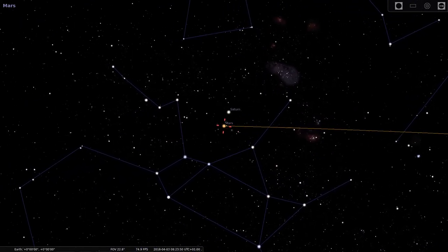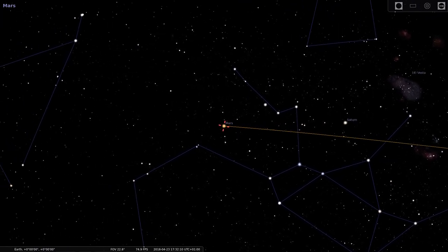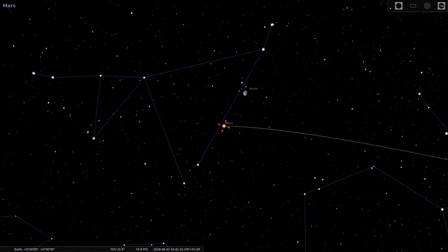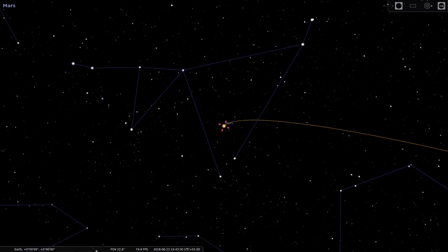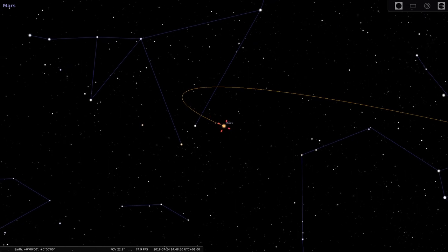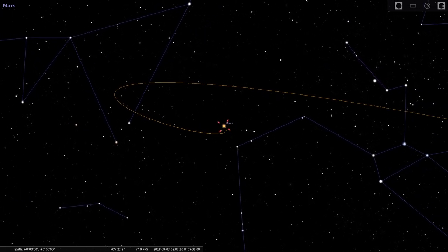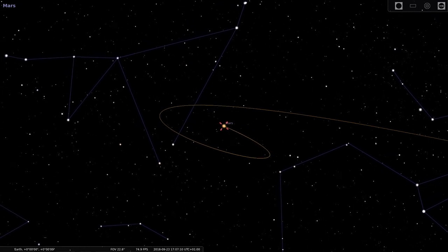As mentioned, the planets move from right to left as they orbit. However, they all sometimes appear to slow down and then move backwards for a bit, from left to right. After a while, they return to their normal right to left motion. Here, we can see Mars performing this odd dance, which is called retrograde motion.